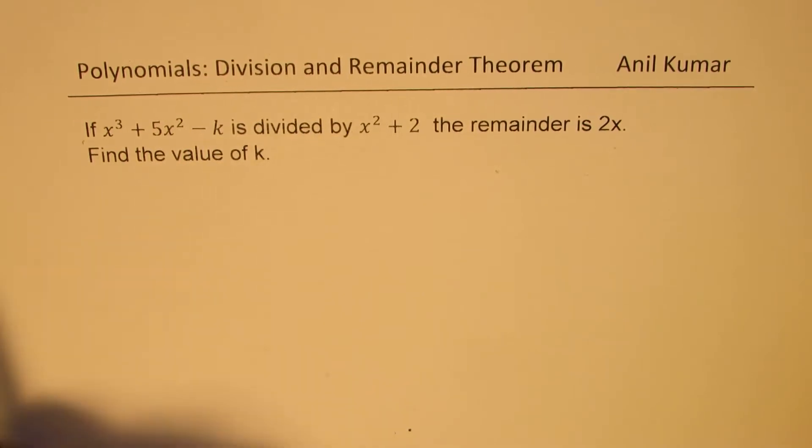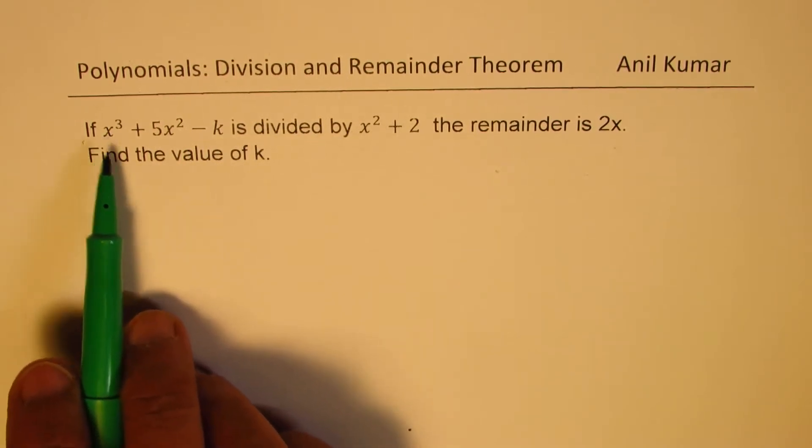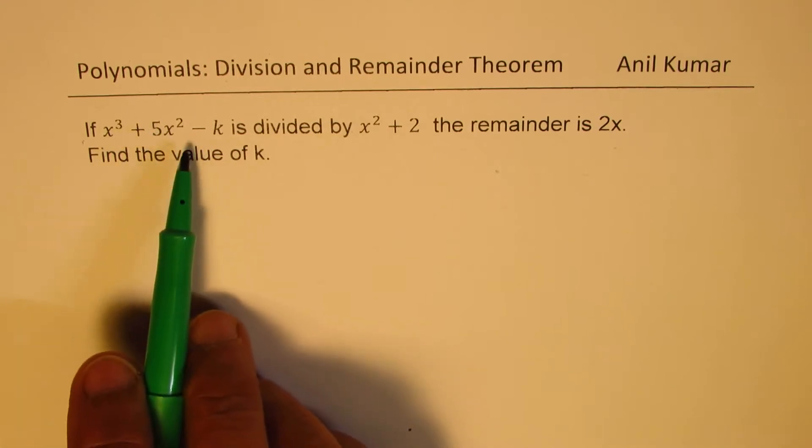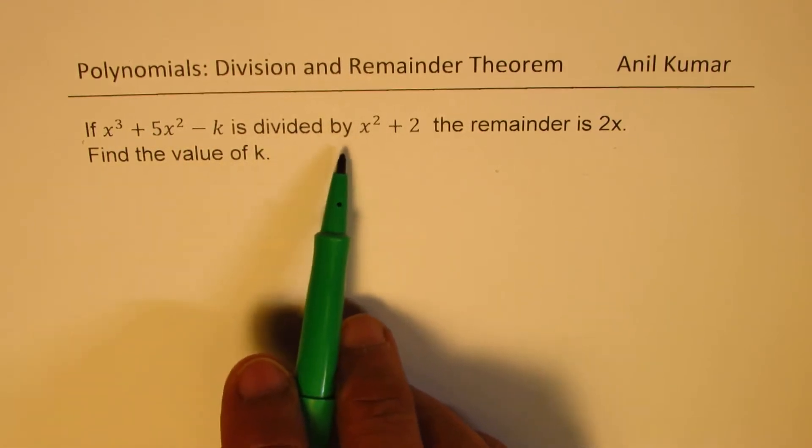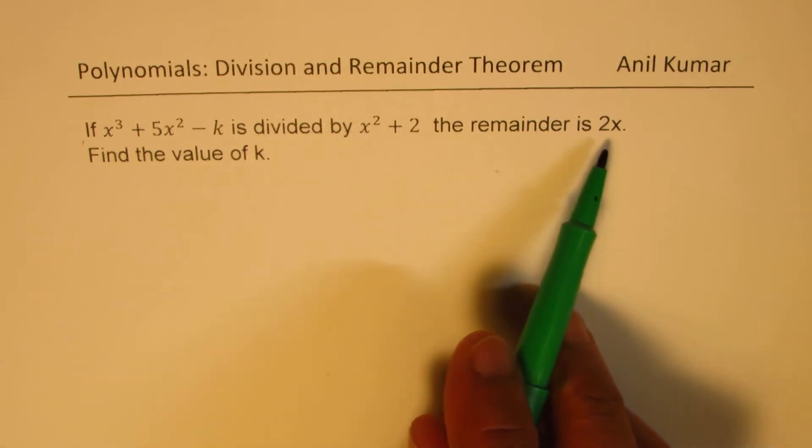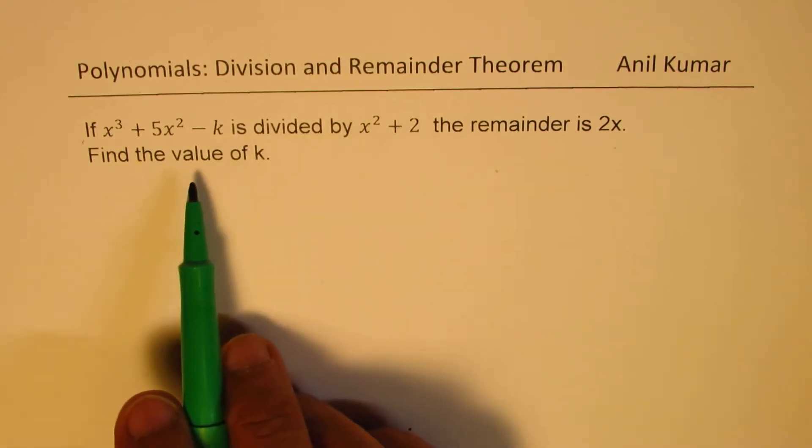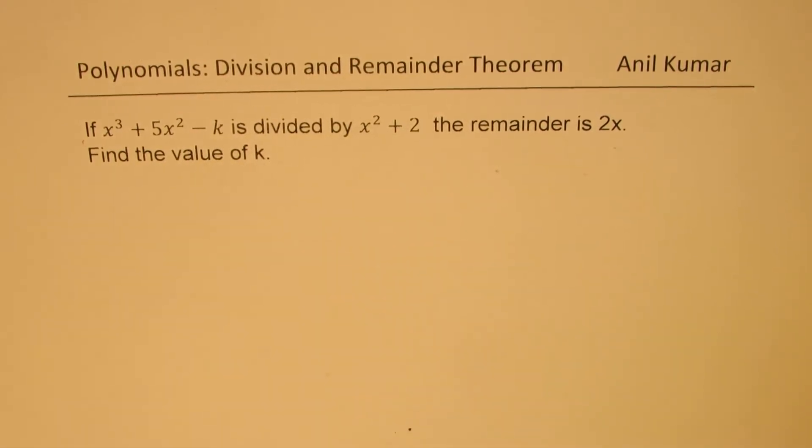The question here is, if x cubed plus 5x squared minus k is divided by x squared plus 2, the remainder is 2x. Find the value of k.